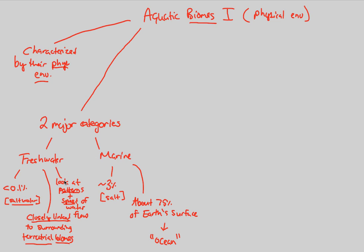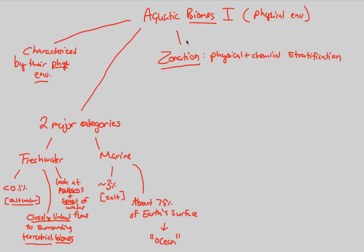From here, we look at the next important topic: zonation. This is a big concept when studying aquatic biomes. Zonation is defined as physical and chemical stratification. When we look at water and its strata — deep water, shallow water, the middle area — we observe the physical and chemical environment there. Physical and chemical properties go hand in hand, and by looking at this stratification we can zone out the aquatic biomes we see. The best way to understand this is through examples.